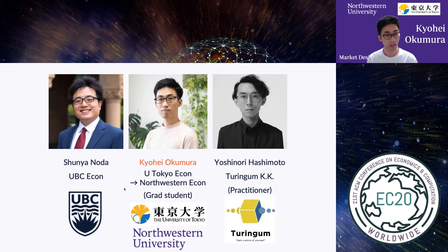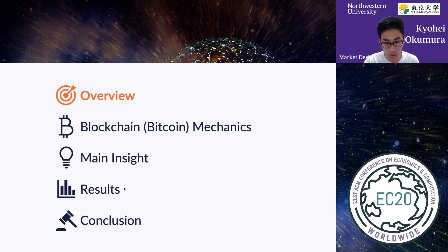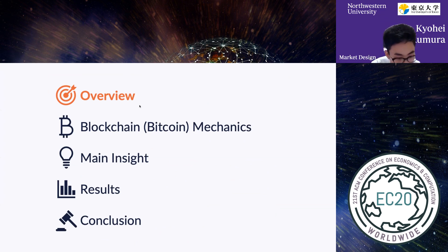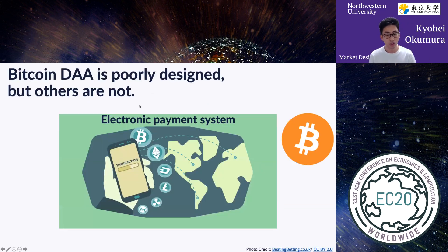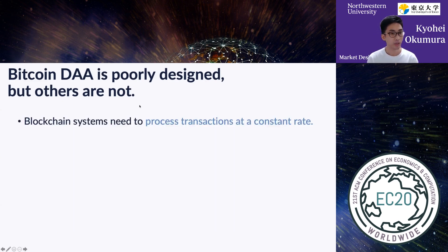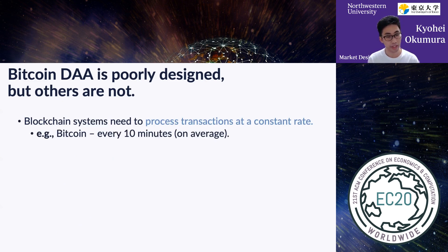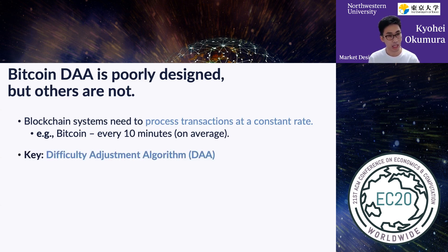Let's get started. Let me briefly overview today's presentation. Our blockchain system is an electronic payment system, and it needs to process transactions at a constant rate. For example, Bitcoin aims to process transactions every 10 minutes. For that purpose, the algorithm named difficulty adjustment algorithm, or DAA, plays an important role.